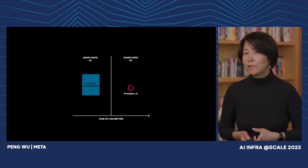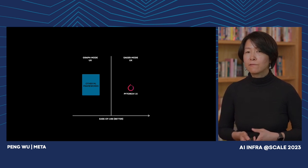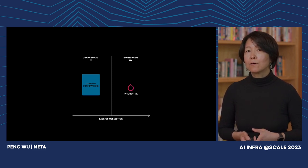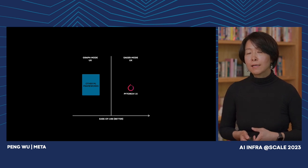PyTorch 1.0 made a bold bet. We decided to value ease of use above everything else, including graph mode. PyTorch 1.0 boldly chose to embrace non-graph mode — we call it eager mode — with the intention to quickly draw adoption from researchers.